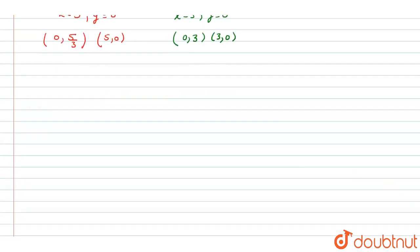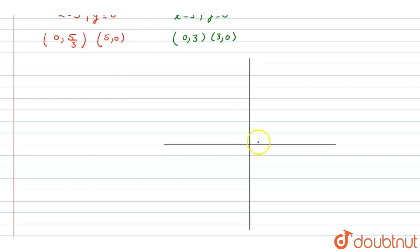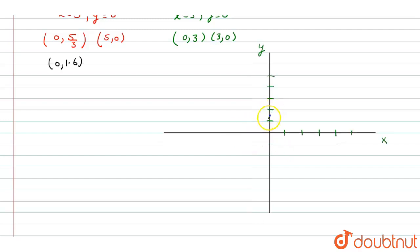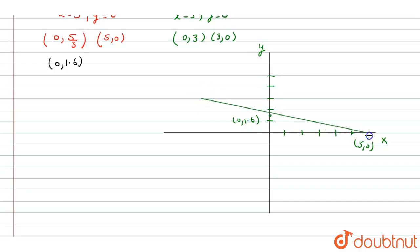Now we draw these points on the coordinate axes. We set up the coordinate graph with numbering 1 through 5, with 1 unit gap between numbers. We plot point (5, 0) and point (0, 5/3), and draw a line passing through these two points. This is the line for equation 1.